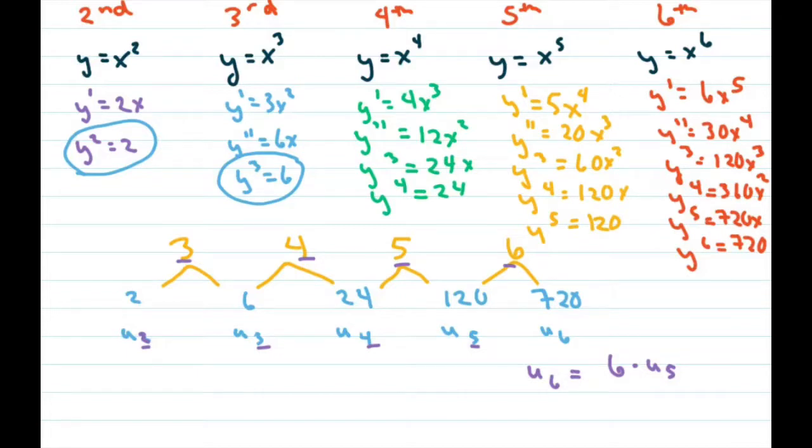And we know u sub 5 is going to be 5 times the previous term. Okay? So basically your formula is going to be u sub 4 equals 4 times the previous term. Okay?